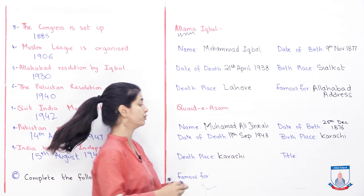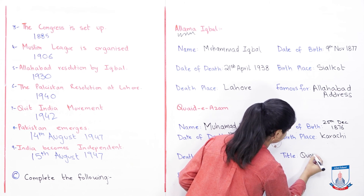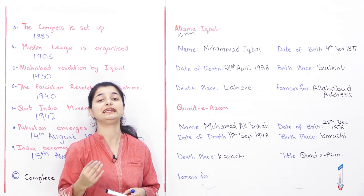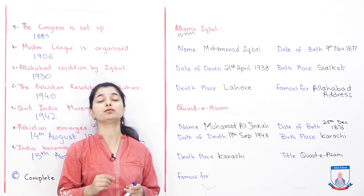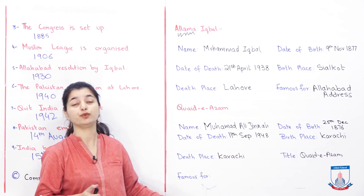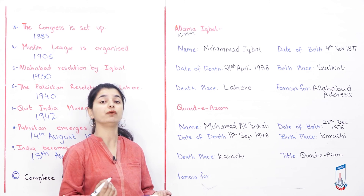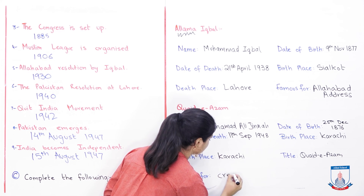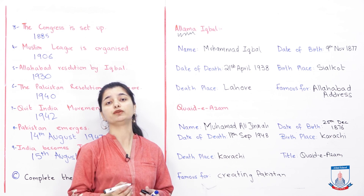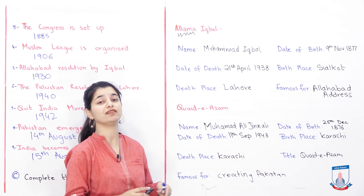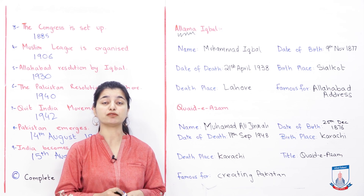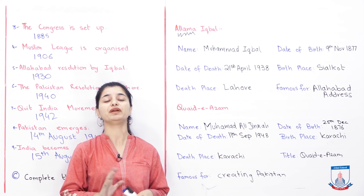His title was Quaid-e-Azam, which means 'great leader'. We usually refer to him by his title rather than his name. And lastly, what was he famous for? It's very simple — he is famous for creating Pakistan. He negotiated with both the British and the Hindus to secure a separate state for Muslims. That is why he is famous and respected to this day. With that, children, we have wrapped up Chapter 14 about the Struggle for Independence. We are done with everything we had to cover.